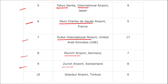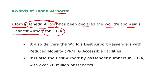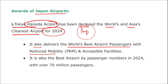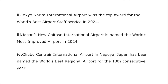Further in the rankings: 4th is Tokyo Haneda International Airport (Japan), 5th is Tokyo Narita International Airport, 6th is Paris Charles de Gaulle (France), 7th is Dubai International Airport, 8th is Munich Airport (Germany), 9th is Zurich Airport (Switzerland), and 10th is Istanbul Airport (Turkey). Tokyo Haneda Airport has been declared the world's and Asia's cleanest airport for 2024. It also delivers the world's best airport experience for passengers with reduced mobility.